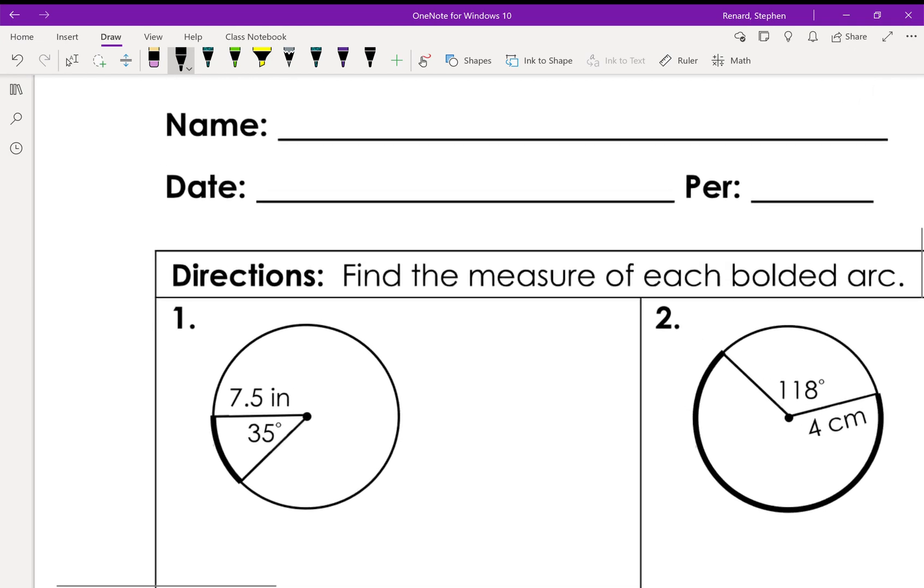So remember, the rule that we're using looks like this: the arc length equals the circumference times x degrees over 360. Because we've been using 2πr for the circumference, this is what we talked about, where x is the arc measure, the degree arc measure.